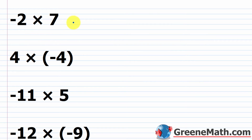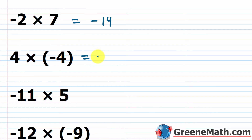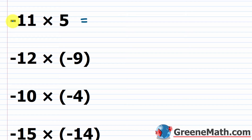Let's work through some problems. Negative two times seven: negative times positive is negative, and two times seven is 14, so the answer is negative 14. Four times negative four: positive times negative is negative, and four times four is 16, so the answer is negative 16. Negative 11 times five: negative times positive is negative, and 11 times five is 55, so the answer is negative 55.